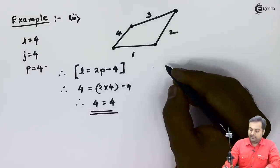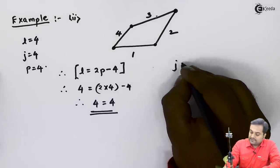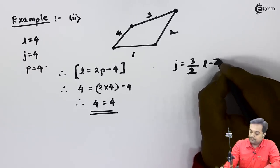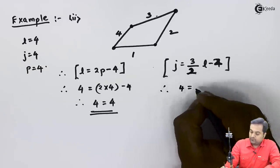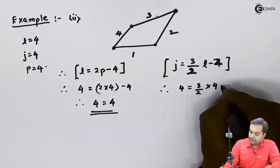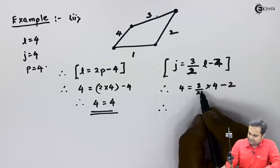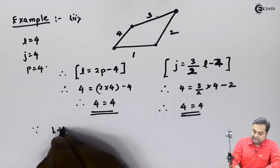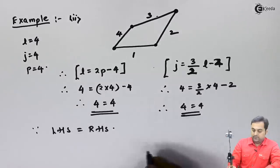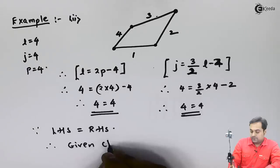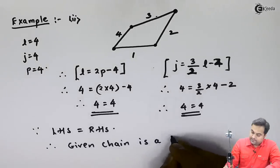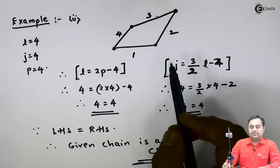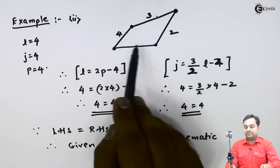Using the joints formula J = (3/2)(L − 2): 4 = (3/2)(4 − 2), which also gives 4 = 3. Since left-hand side equals right-hand side in both formulas, the given chain is confirmed to be a kinematic chain. This means motion is possible — it is not a structure.